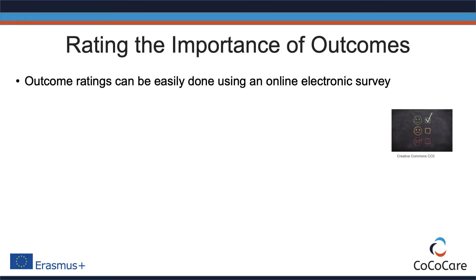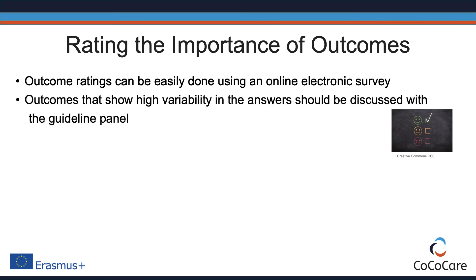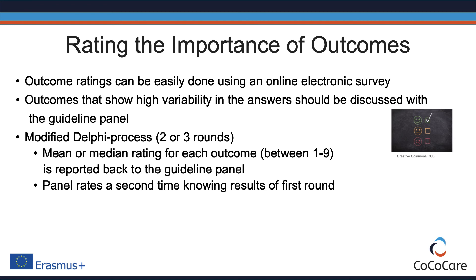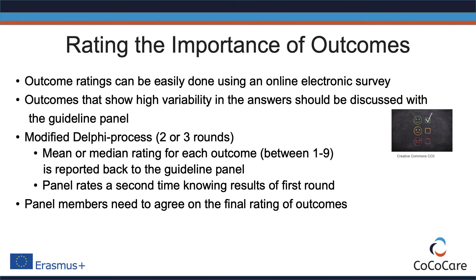Such outcome ratings can be done easily with an online electronic survey. Outcomes that show high variability should be discussed with the guideline panel and stakeholders. To achieve better consistency of individual ratings, a modified Delphi process can be very helpful. After the first round of ratings, the mean or median rating for each outcome is calculated and reported back to participants. The panel is then asked to rate the outcomes again, and at the end, panel members need to agree on the chosen outcomes and their final ratings.